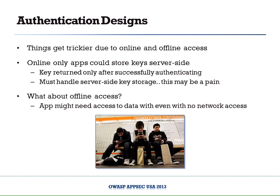Let's look at authentication designs. It gets tricky when you want to support both online and offline access. Online is straightforward: connect, authenticate to a web server, retrieve an encryption key from the server — this lets you enforce server-side policies, lockouts, and all that. For offline access, employees still need access to their files without internet connectivity, so you need a way to encrypt and decrypt data and retrieve a key while offline. That introduces some issues.